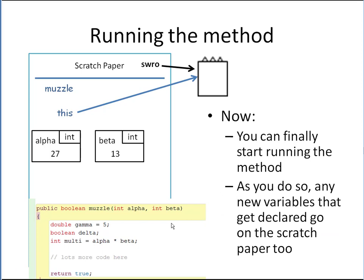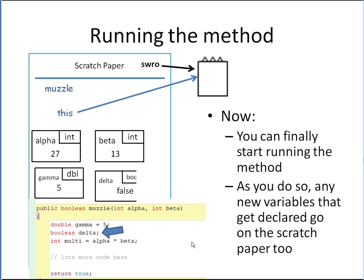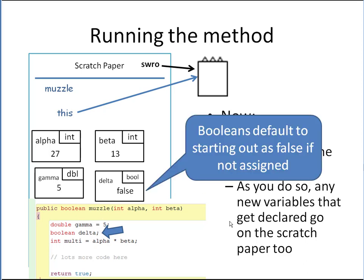Now we can finally start running our method. If we have any new variables we make within our method — our local variables — they go on the scratch paper too. This line says 'double gamma = 5', so we make a new box for a double called gamma and it gets 5. The next line says 'boolean delta', so we make a new variable for a boolean called delta, and because it doesn't get initialized, it gets false — booleans default to false if you don't assign them otherwise.